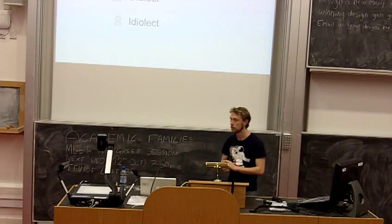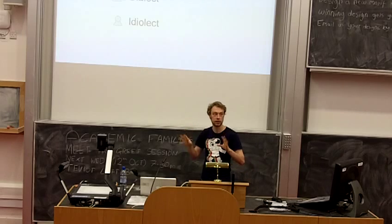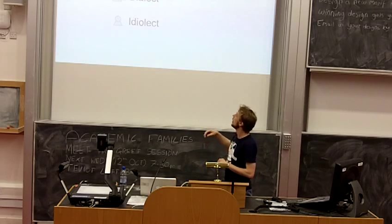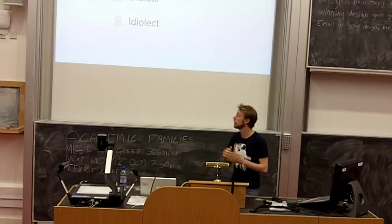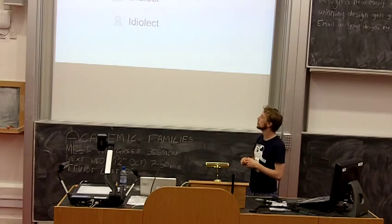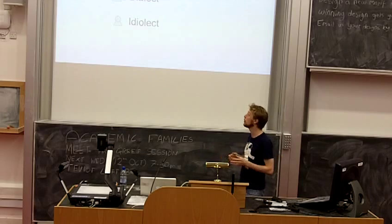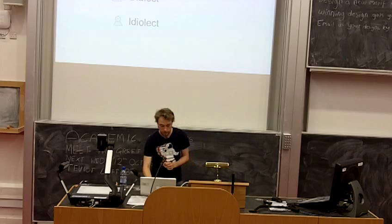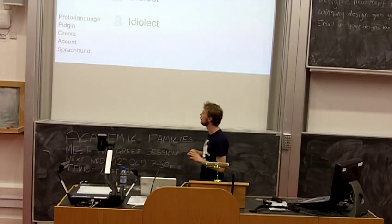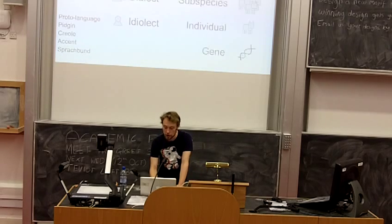We have different ways of grouping linguistic variation. At the very bottom you have the idiolect — the speech of a single person. Then a language, something like English or German. In between, a dialect. And at the top, language families like Germanic. The question is how you know that an amount of linguistic variation is a language and not a dialect or a family. You also have other terms that cross-cut variation in different ways: proto-language, pidgins, creoles, accents — different ways of categorizing linguistic variation.